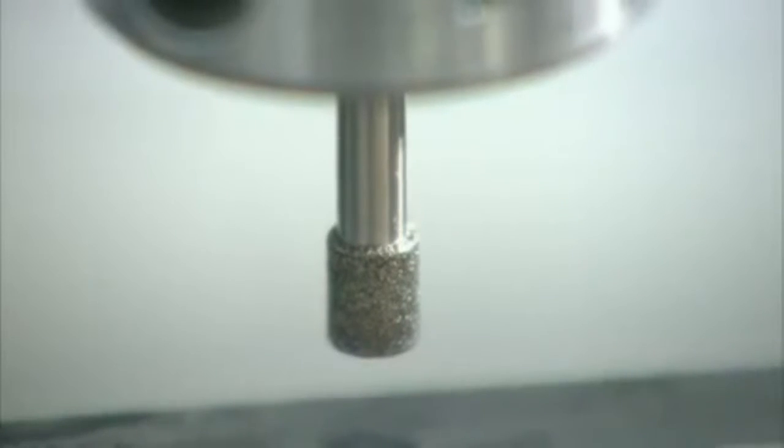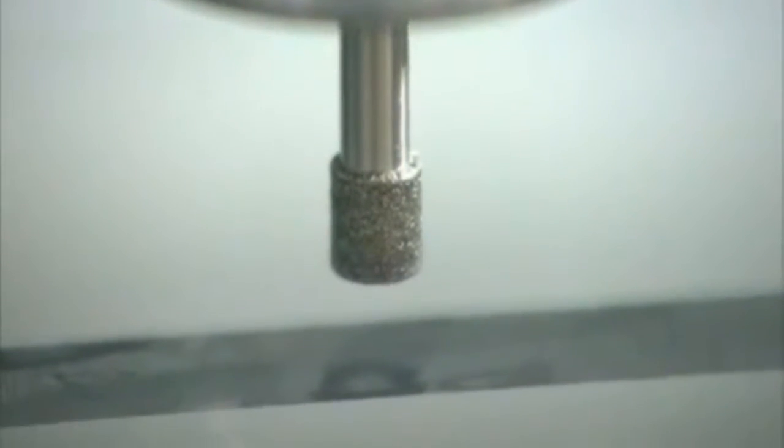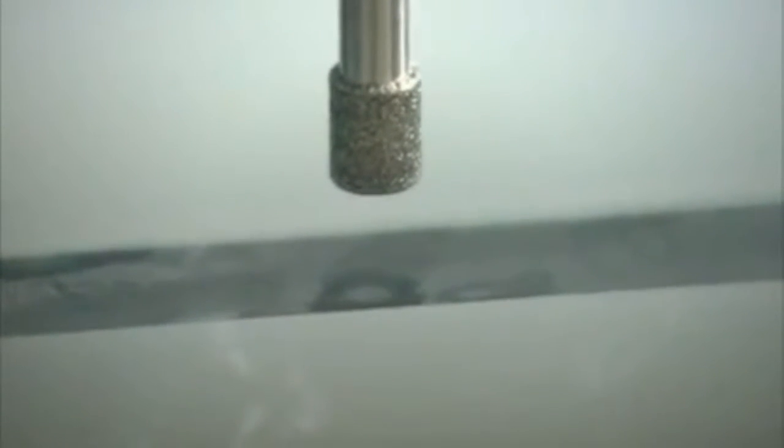We set a glass plate on the machining device. When this tool rotates, it grinds a hole in the glass. Let's see what happens with ultrasonic vibration and without.